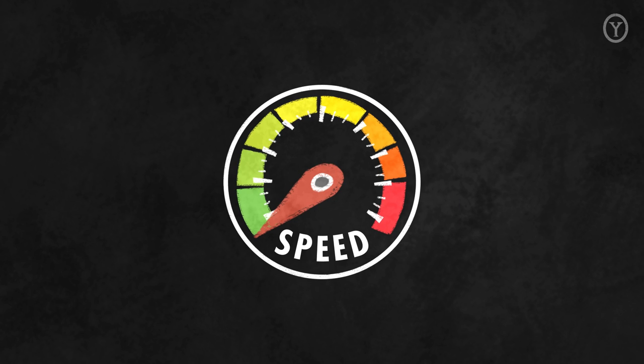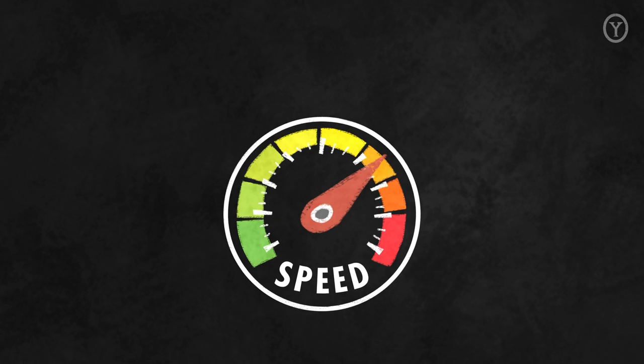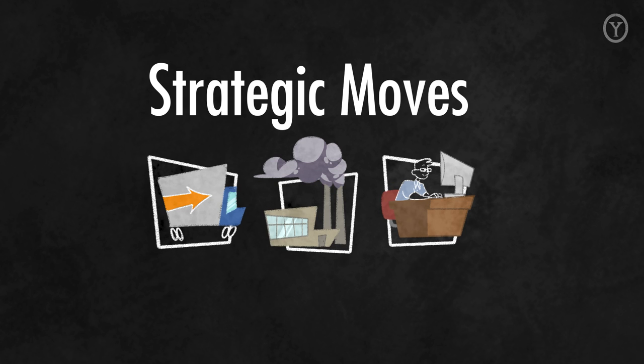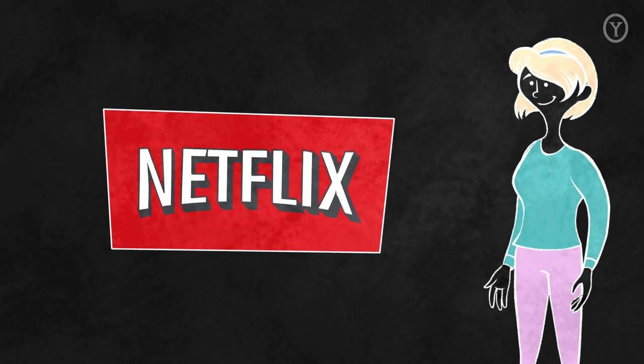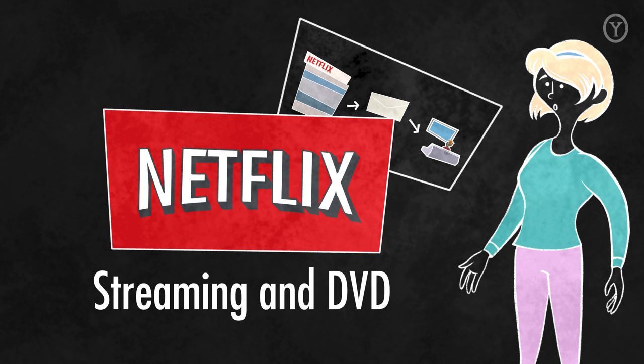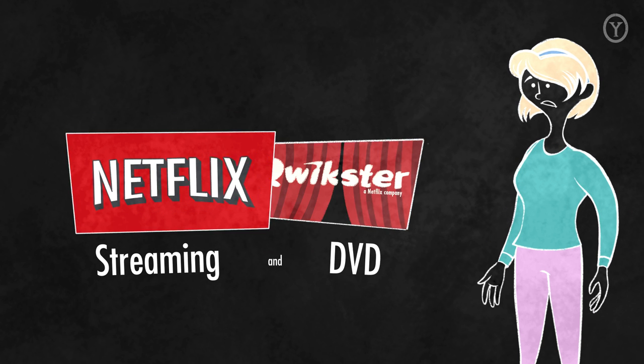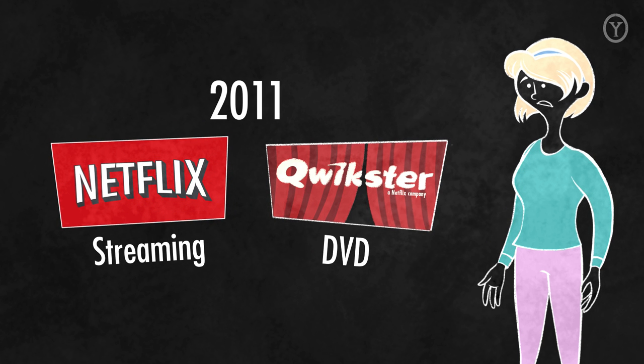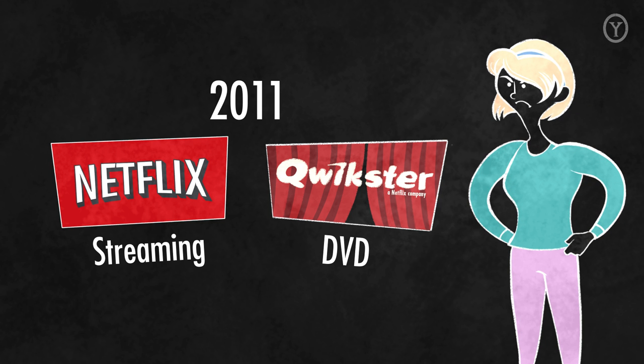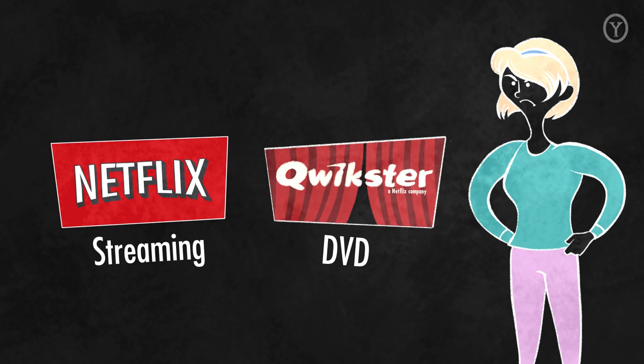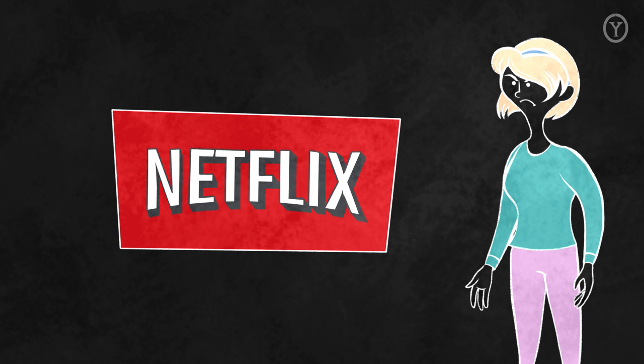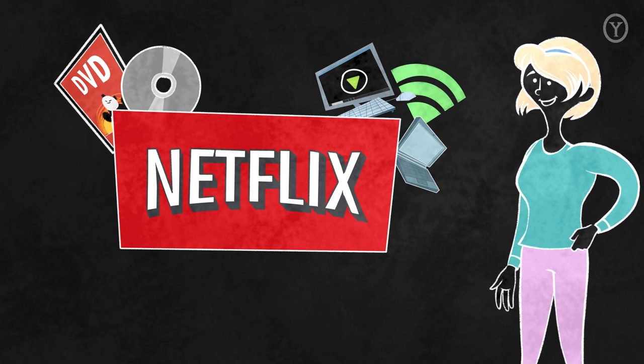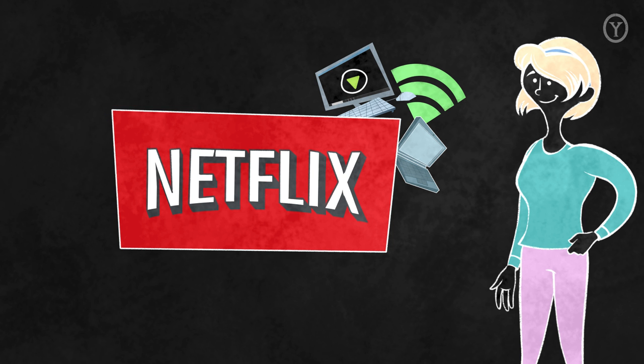A key part of developing a strategy includes determining the right speed and sequence for these strategic moves. Netflix learned this the hard way by trying to shift a bit too quickly and break from the old strategy by splitting the streaming and DVD businesses into two in 2011. The market was simply not ready for this shift. After a negative reaction from customers, Netflix decided to keep the businesses together and adopted a new strategy of slowly phasing out their DVD business.